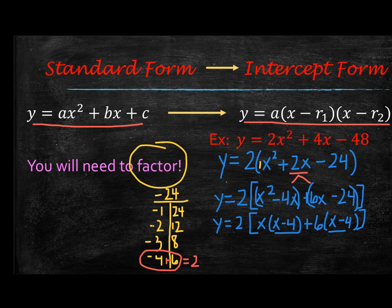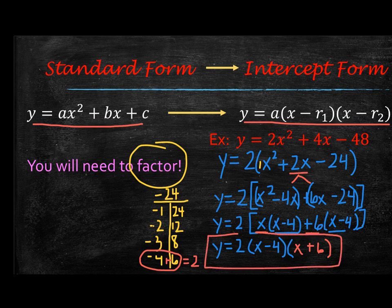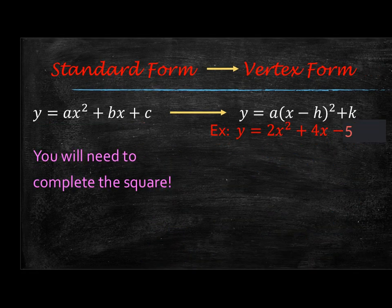So notice that the parentheses match. I will bring down the y equals 2. And my first set of factors is the matching parentheses. And my last factor is what is on the outside, which is x plus 6. And so now I have converted it into intercept form. You should be able to tell real quick and easy what your intercepts are, what your x-intercepts are from this format.